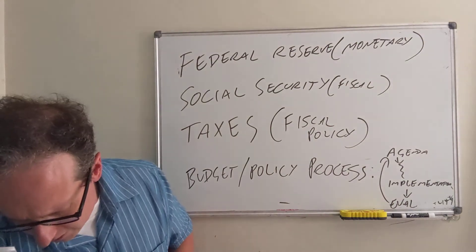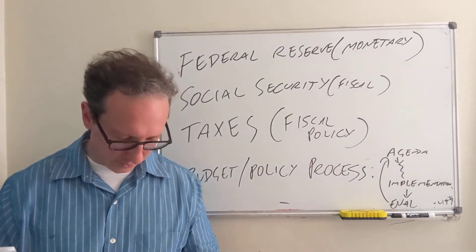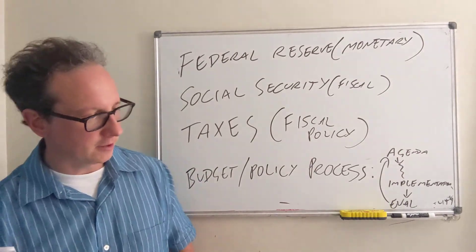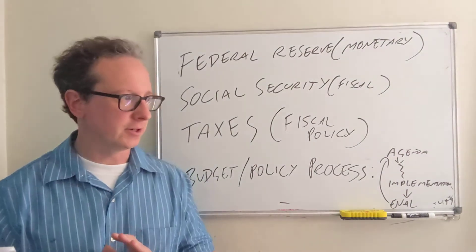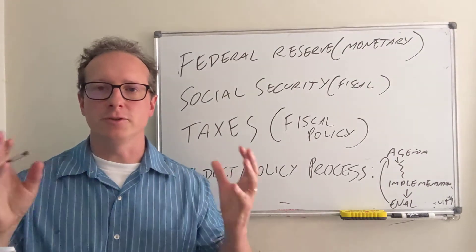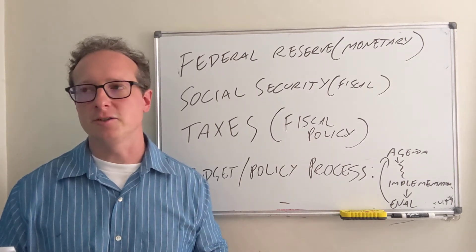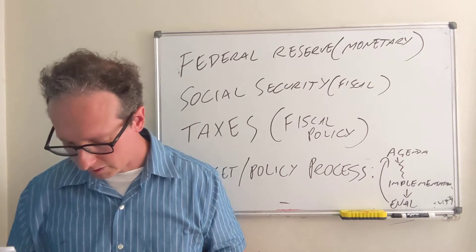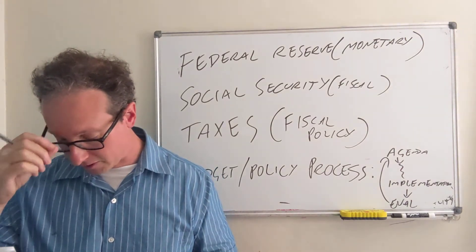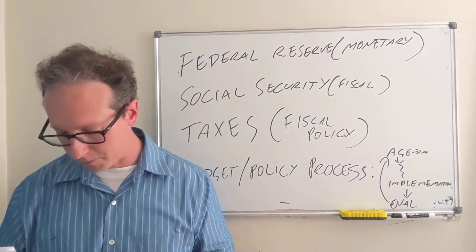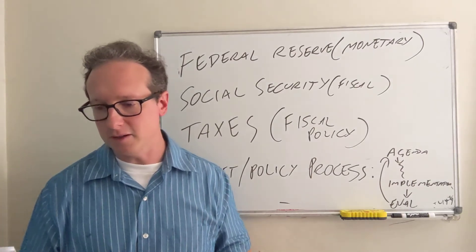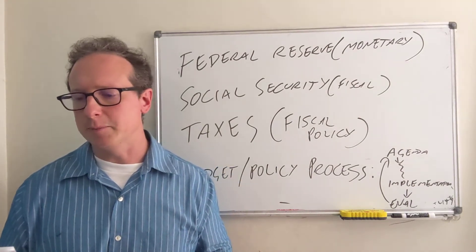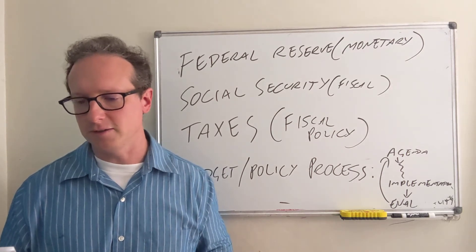So let's talk more about fiscal policy — a little about budget-making and the welfare state in the U.S. Monetary policy is just trying to keep the economy going and make sure there's enough money in the economy, but also that the money is worth something. The welfare state in the U.S. is really very paltry compared to other developed countries.